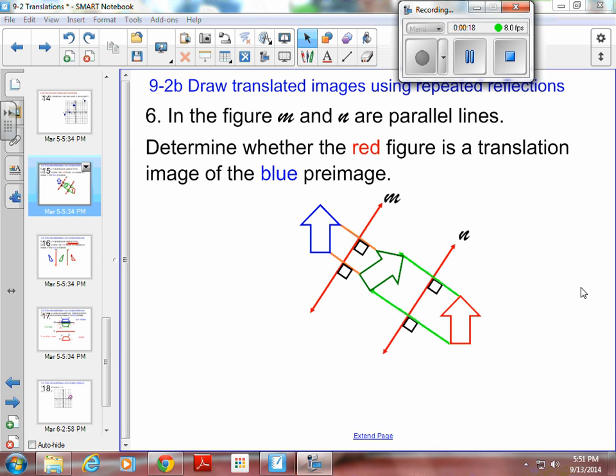So the question is, is the red arrow and the blue arrow a translation? Meaning, is it the same thing as if I would have just slid it over there? So is a reflection across two parallel lines going to give you a translation?